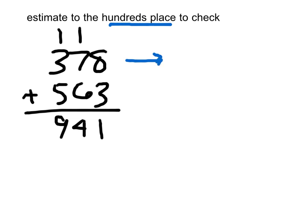If you watched the rounding video already, we'll circle that digit, underline it. 378 is closest to 400. And then we'll take the other addend and round it to the nearest hundreds place. 563 is closest to 600.